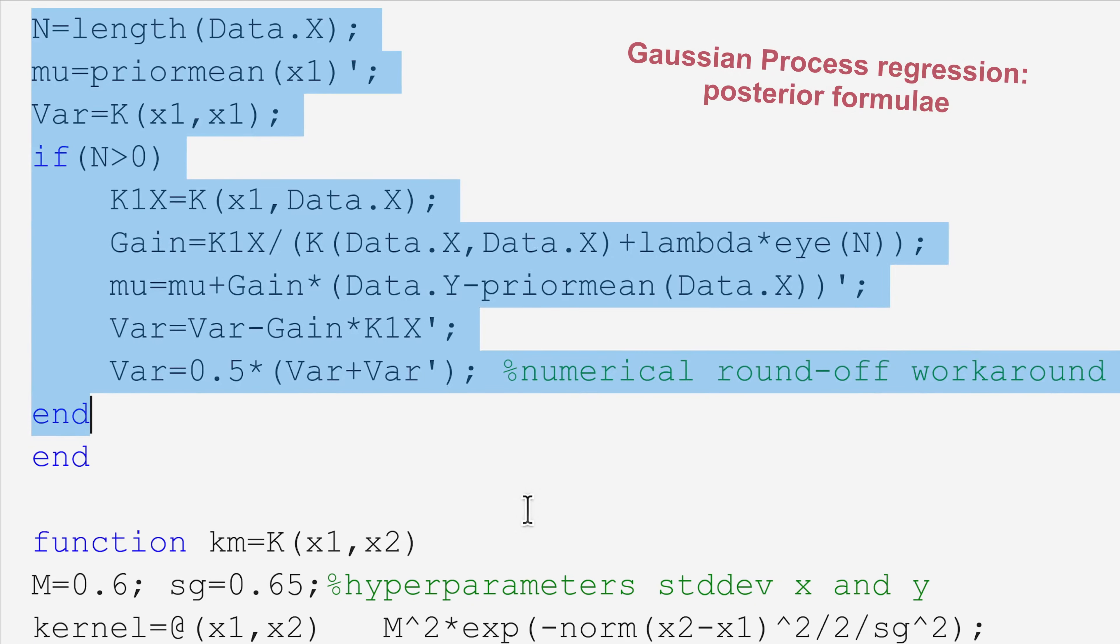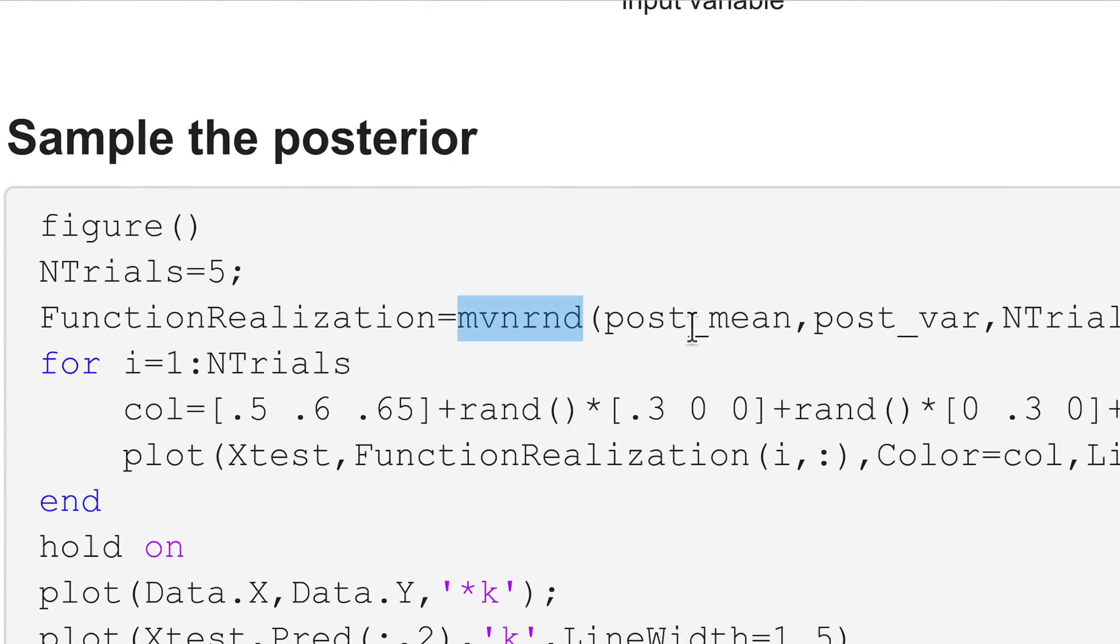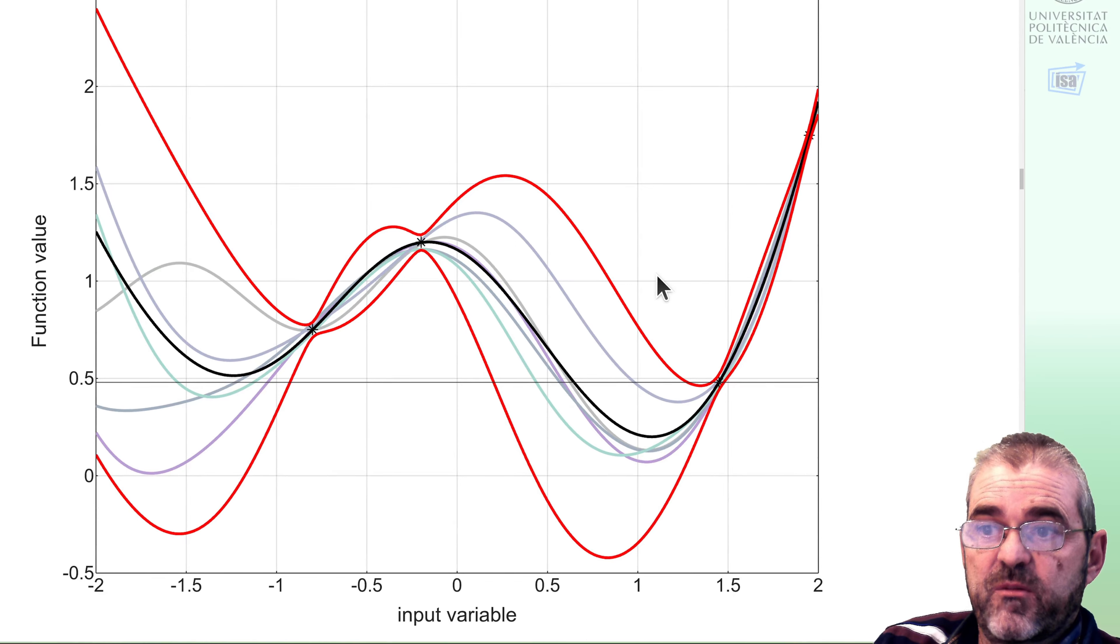We get these four points and then we compute the posterior. Here we have the standard Gaussian process regression code. We are not commenting here for brevity. The thing is that with this code, we obtain mean and variance at the 201 test points given the data. With this posterior mean and variance, we can roll the dice to get realizations of the posterior.